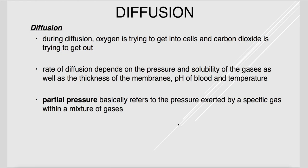With diffusion, oxygen is trying to get into the cells so they can use it to make energy, and carbon dioxide is trying to get from the cells into the blood. The rate of diffusion depends on partial pressure — the pressure exerted by a specific gas in a mixture — as well as solubility. Oxygen is not very soluble in water, while CO2 is more soluble. The thickness of the membranes, pH of blood, and temperature also affect diffusion.